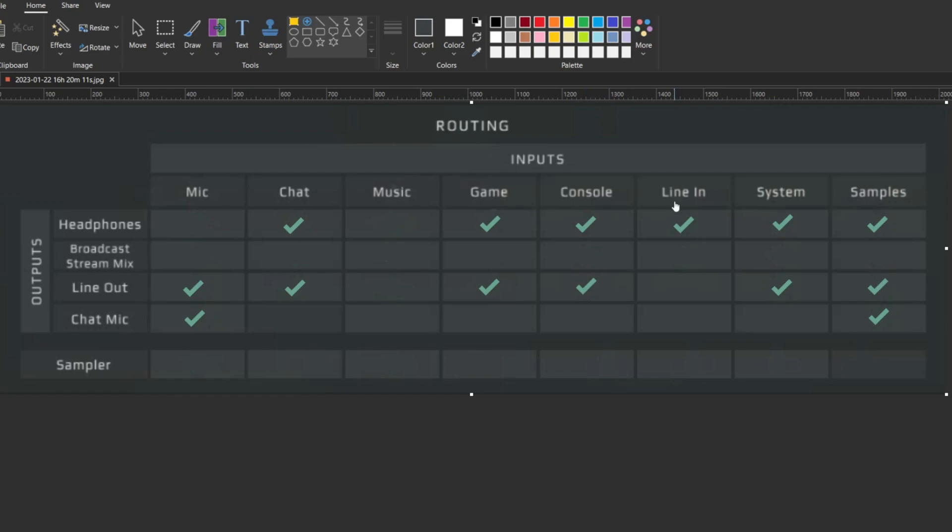The GoXLR's line-in is coming from our streaming PC and you're going to route that to your headphones. For your system audio sounds, make sure you route that to your headphones and your line-out. Finally, if you're running any samples, make sure you route that to your headphones if you want to hear those, as well as your line-out and your chat mic if you want your chat in Discord to hear those.